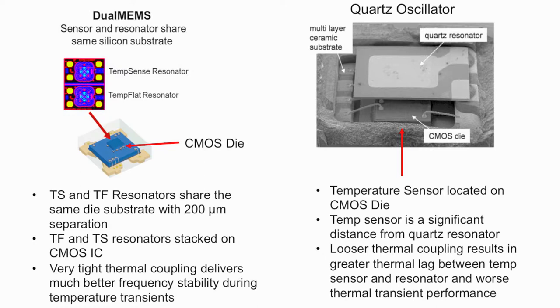By contrast, the Elite family of SiTime MEMS oscillators have a dual resonator construction with the TempSense MEMS sharing the same die substrate with the TempFlat with 200 micron separation. With this close proximity and sharing the same die substrate, the thermal coupling between the temperature sensor and resonator is very tight resulting in a very small thermal lag. The dual resonator is stacked on top of the CMOS die which contains CMOS circuit elements including sustaining amplifier, temperature to digital converter, and fractional PLL.